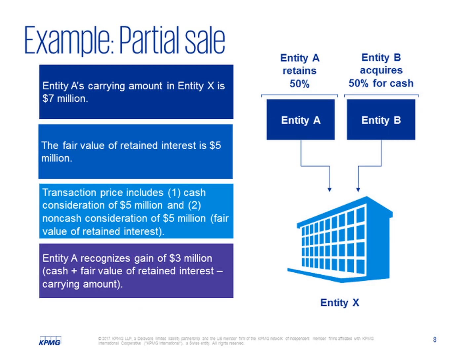If we assume that the carrying amount of entity X is $7 million to entity A and the fair value of entity X is $10 million, then entity A would recognize a gain of $3 million. In this example, the cash of $5 million received for selling the 50% interest plus the fair value of the retained interest of $5 million represents the total consideration of $10 million. The total consideration of $10 million less the carrying amount of $7 million gives entity A a gain of $3 million.